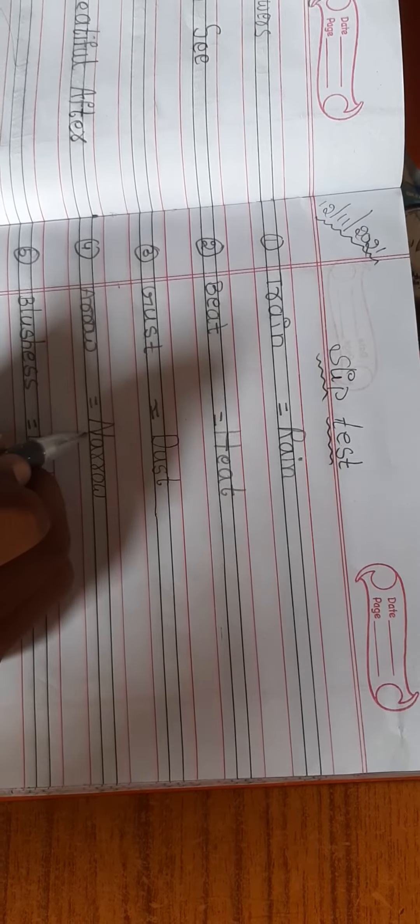A-R-R-O-W, arrow. L-U-S-H-E-S, lushes. L-I-F-T, lift. G-I-F-T, gift. B-R-O-W-N, brown. C-R-O-W-N, crown.